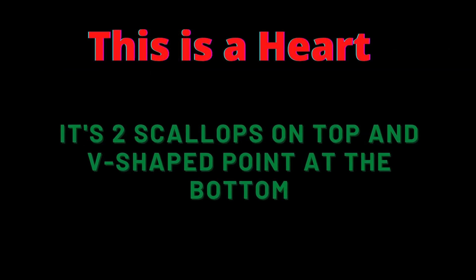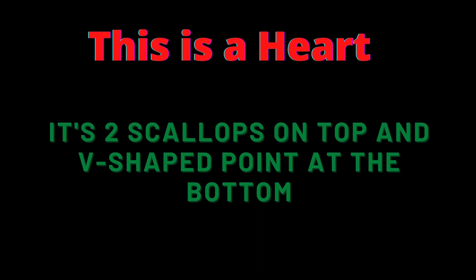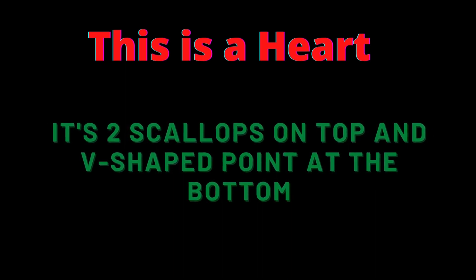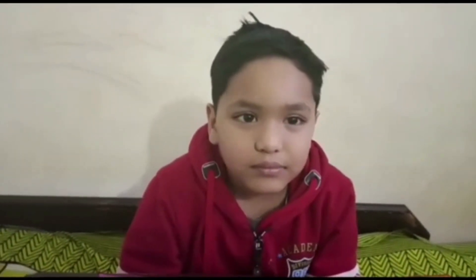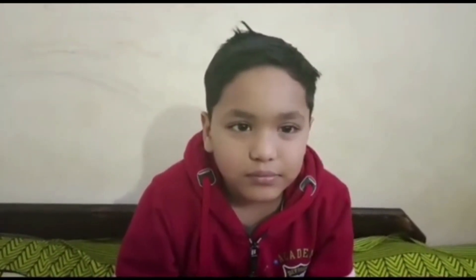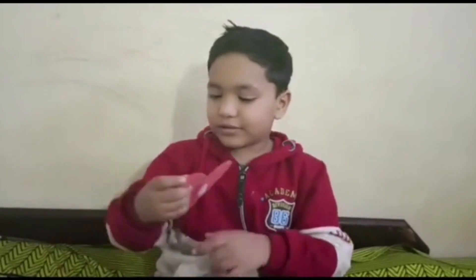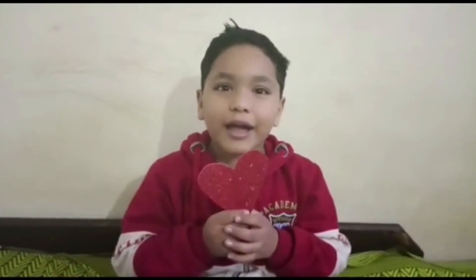This is a heart. It has two scallops on top and a V-shaped point at the bottom. With a point on the bottom and two arms on the top — when it comes to love, I just can't stop. What shape is that? It is a heart.